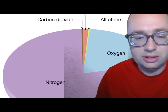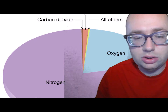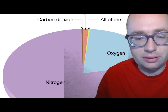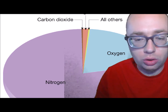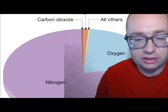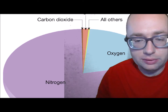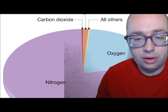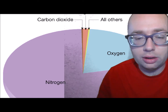Oxygen is needed by animals to breathe, and carbon dioxide is used by plants in photosynthesis. Solid particles — including ash, dust, volcanic ash, etc. — are small parts of the atmosphere. They are important in making clouds and fog.